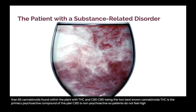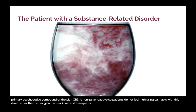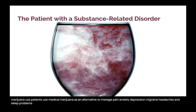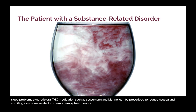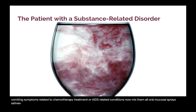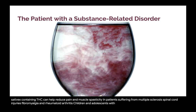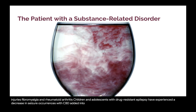Medical marijuana use: patients use medical marijuana as an alternative to manage pain, anxiety, depression, migraine headaches, and sleep problems. Synthetic oral THC medications such as Cesamet and Marinol can be prescribed to reduce nausea and vomiting as symptoms related to chemotherapy treatment or AIDS-related conditions. Nabiximols oral mucosal spray (Sativex) containing THC can help reduce pain and muscle spasticity in patients suffering from multiple sclerosis, spinal cord injuries, fibromyalgia, and rheumatoid arthritis. Children and adolescents with drug-resistant epilepsy have experienced a decrease in seizure occurrences with CBD added to their therapy.